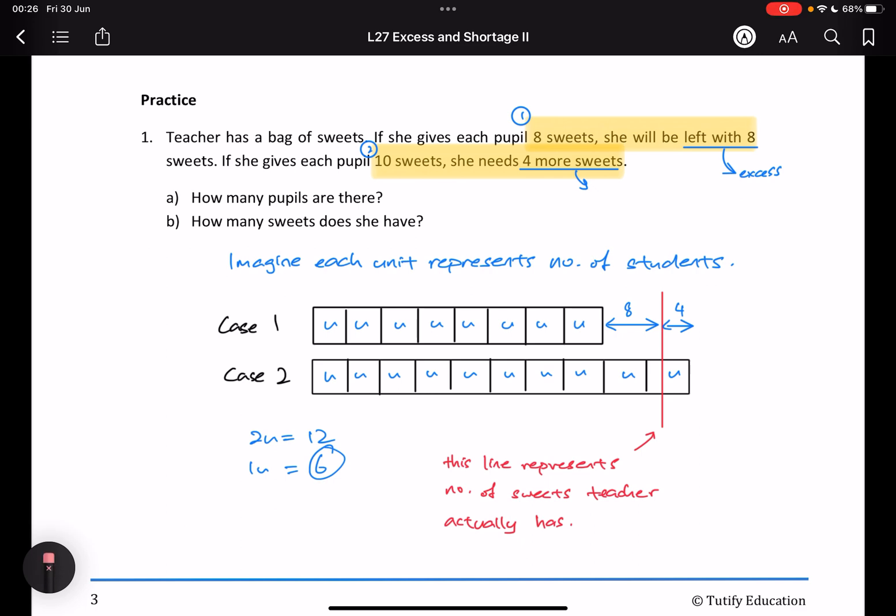How many sweets does she have? So, you know that there's six students, right? There are six students. If each of them gets eight sweets, I'll have eight sweets left. Or, there are six students. Each of them get ten sweets. Sorry, I don't have that many. I'm short of four.